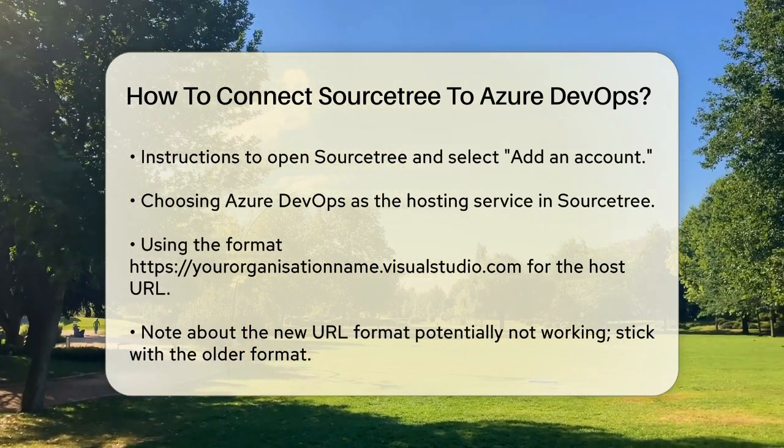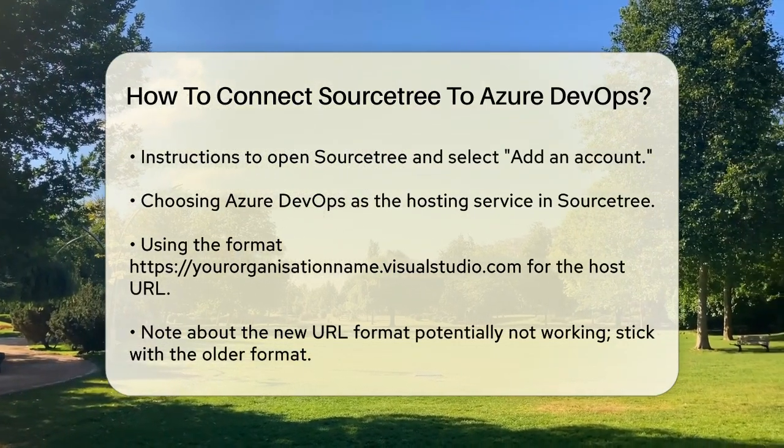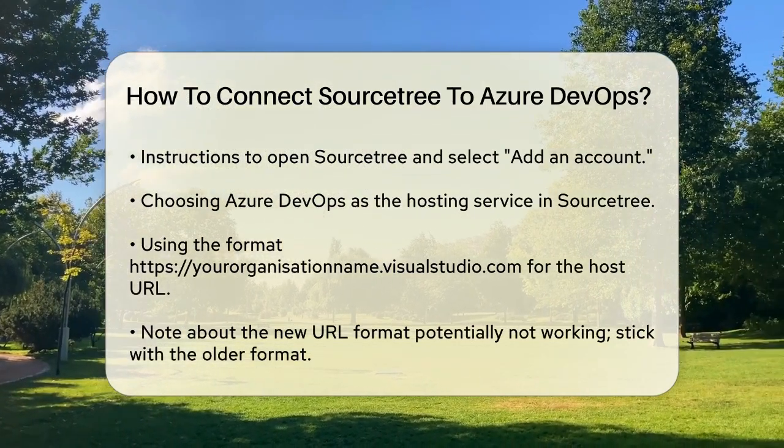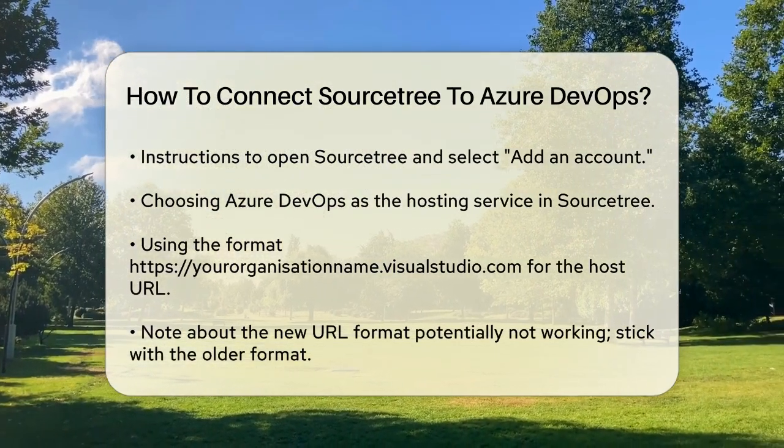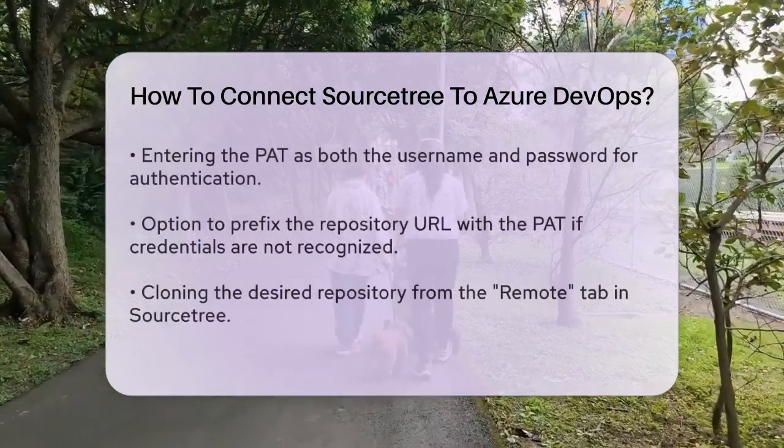For example, you would use https://yourpat@yourorganizationname.visualstudio.com/yourrepo.git.